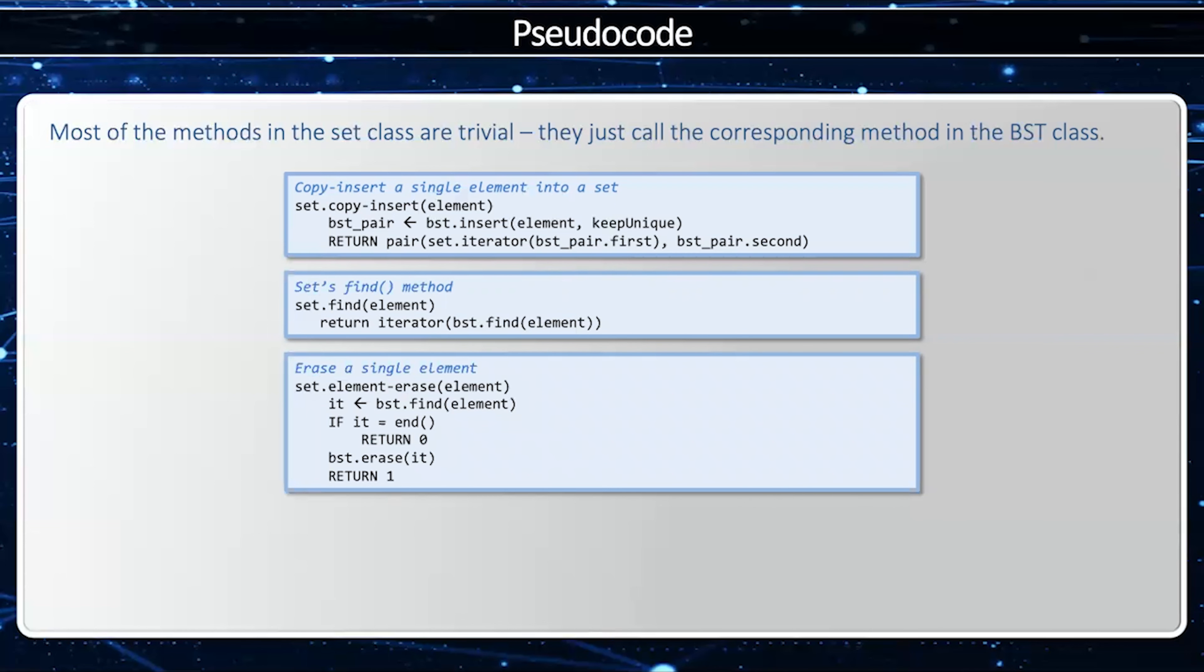Erase a single element. Well, first I got to find it. So I'm going to get a BST iterator from find. And then if it's the end iterator, in other words, the element is not in the collection, then I'm going to return zero, which means I deleted zero elements. Otherwise, I'll erase it using the BST's iterator, and then I'll return one because I've removed one element. And even the initializer list constructor, first of all, I'm going to clear my BST, and then I'm going to insert the elements one at a time into my BST. So all these implementations are done using the BST's methods.